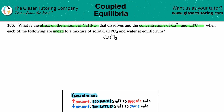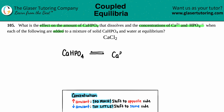Let's first write out the balanced equation. We are starting with CaHPO4, so we have CaHPO4 coming to equilibrium with Ca2+ and HPO4 minus. So we have Ca2+ and HPO4 minus. It looks like we're setting up a solubility product here.